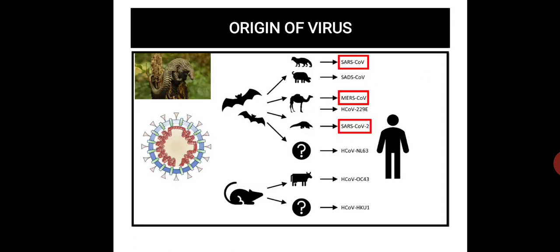Regarding the origination of these viruses: the first SARS-CoV originated from the civet cat, and MERS-CoV originated from Arabian camels — transmitted from camels to humans, then human to human. SARS-CoV-2, the latest version, is expected to have originated from pangolins, and human-to-human transmission has continued worldwide.